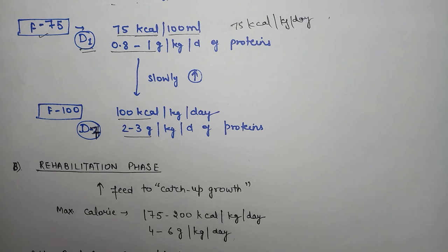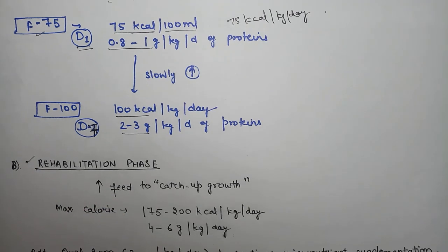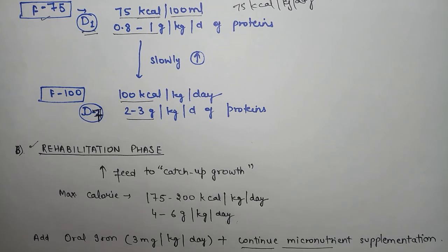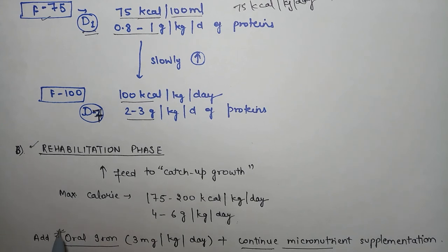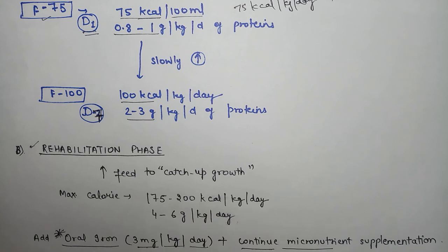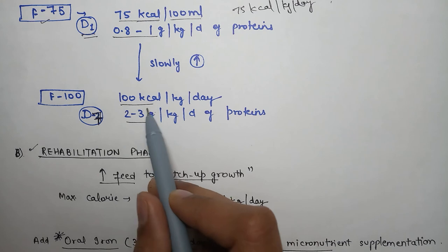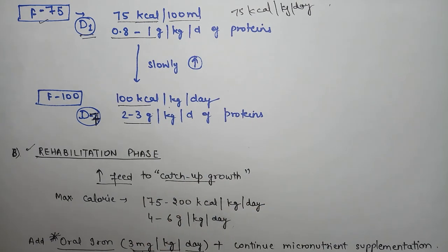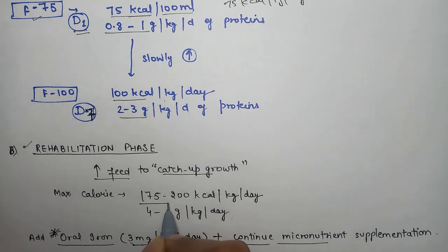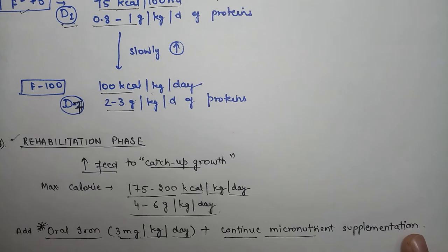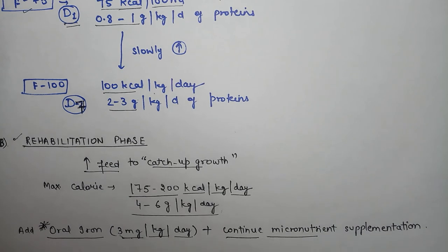In rehabilitation phase, continue micronutrients and add oral iron - 3mg per kg per day. Increase food gradually from F75 to maximum calories of 175-200 kilocalories per kg per day, with protein 4-6 grams per kg per day. Continue oral iron and micronutrient supplementation. Thank you.